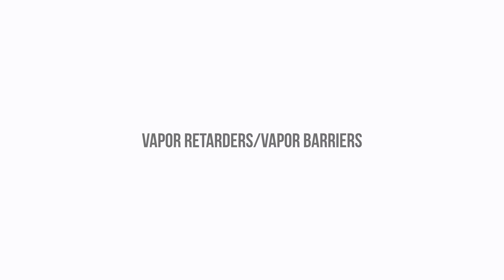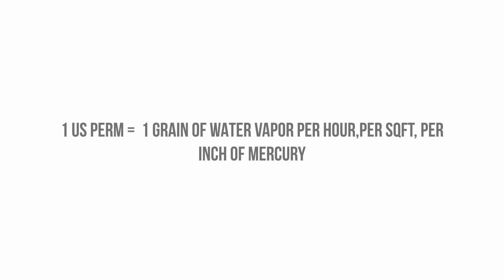Now a perm itself is an odd measurement. One perm is equal to one grain of water vapor per hour, per square foot, per inch of mercury. The one inch of mercury is just the vapor pressure differential.